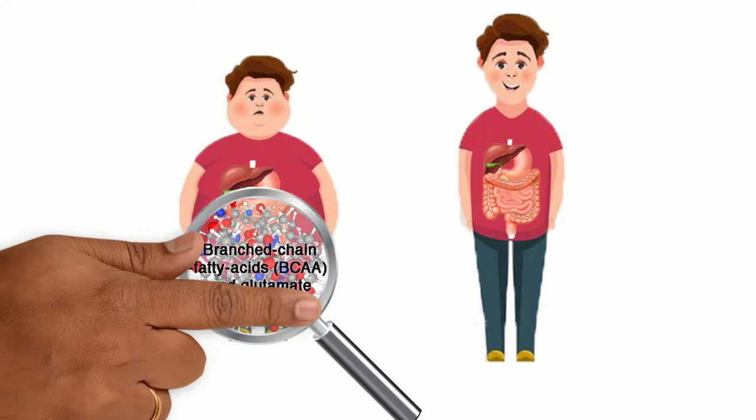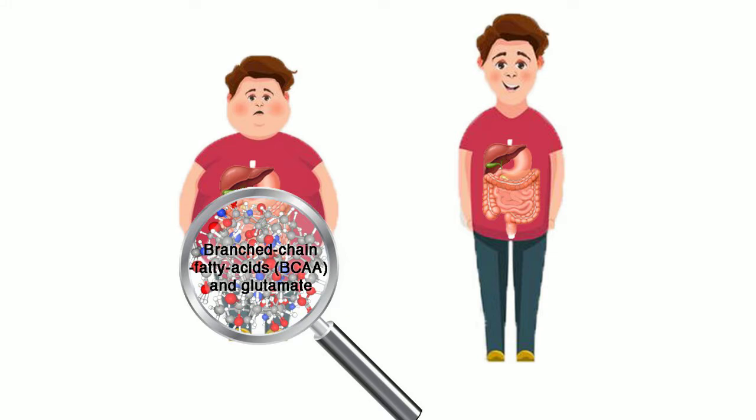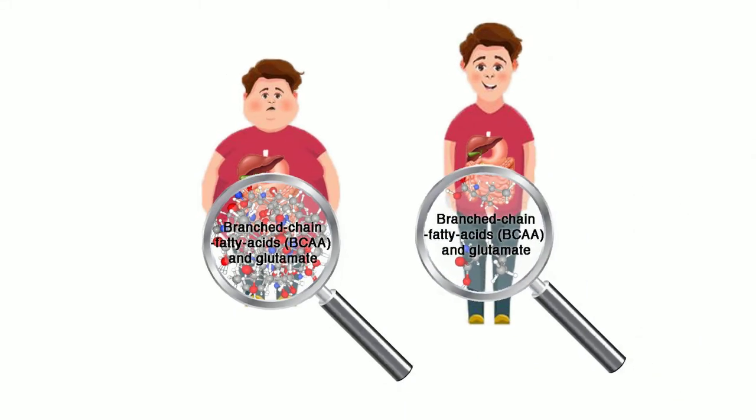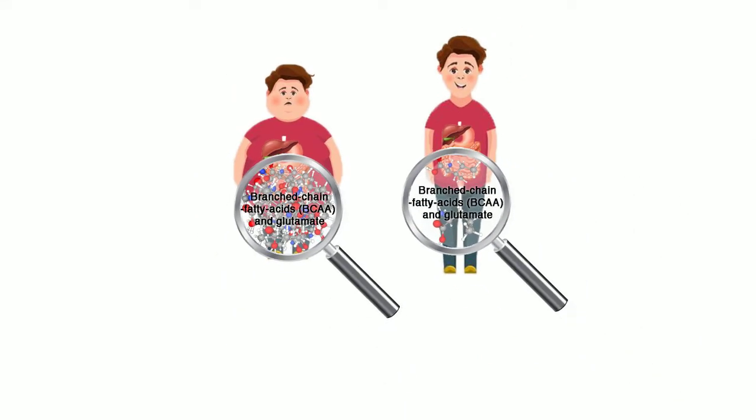Branched-chain fatty acids, BCAA, and their metabolite glutamate are found in greater abundance in obese humans than in lean humans.